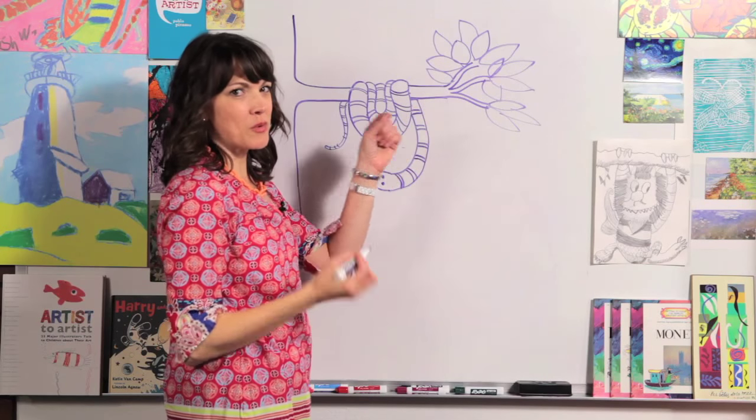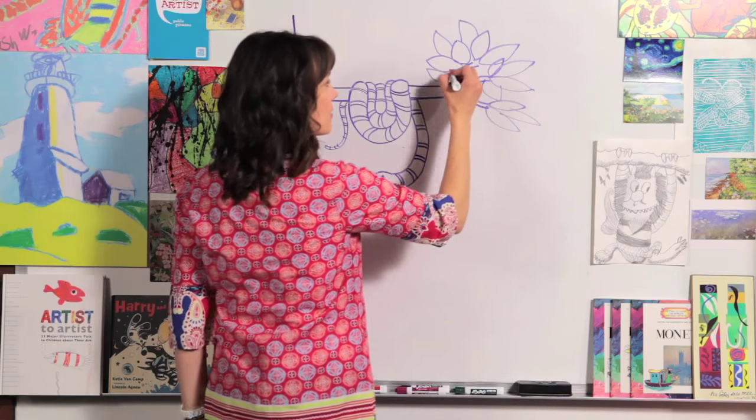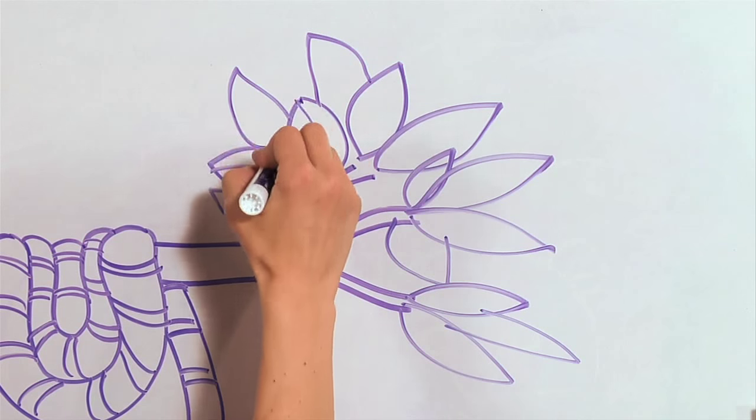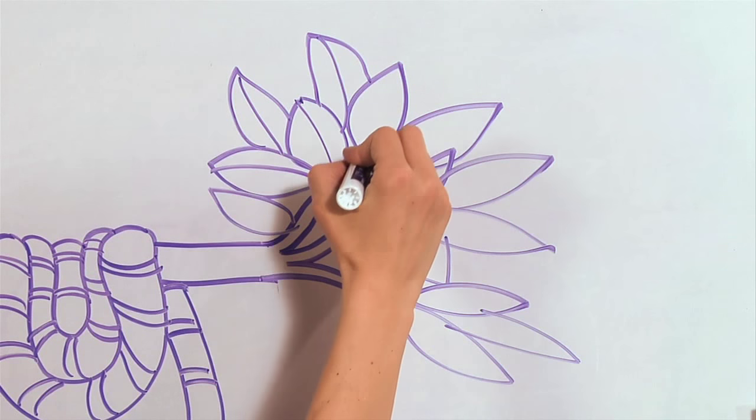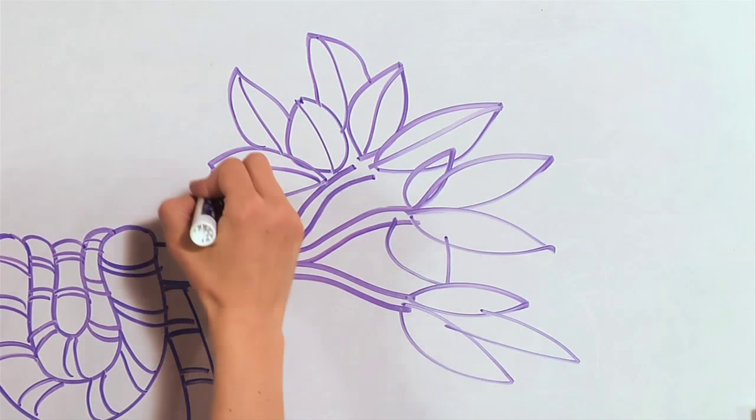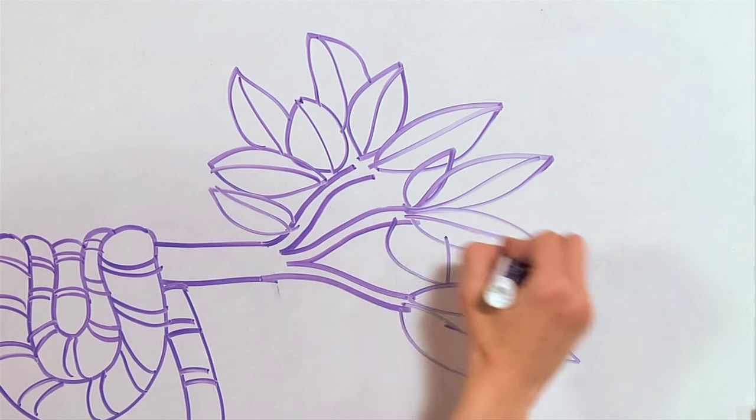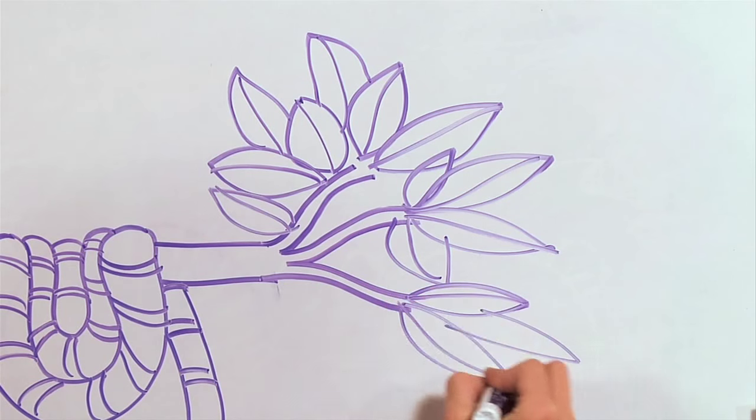Now to make these leaves more interesting we're going to put a line right down the middle. Alright, like this. Just gives your drawing a little bit more texture. It looks more realistic. Let's do that.